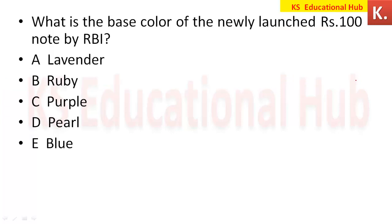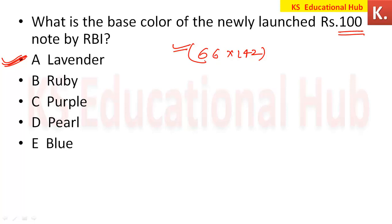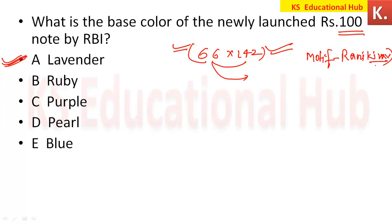What is the color of the newly launched ₹100 rupees note? The color is lavender. Going deeper, its dimension is 66 × 142 mm — you should know this dimension in case the exam gives options like 66×146 or 66×140. The motive on the new ₹100 note is Rani ki Vav. So remember: lavender color, 66×142 mm dimension, and Rani ki Vav motive.